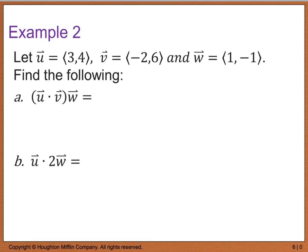For example 2, it tells us that vector u is 3, 4, vector v is negative 2, 6, and vector w is 1, negative 1. For part a, we're going to find the dot product of u and v multiplied by vector w. So the first thing I'm going to do is the dot product first. When I do the dot product, I have u and v, which is 3 times a negative 2, plus 4 times 6, and then I'm going to multiply that by vector 1, negative 1.